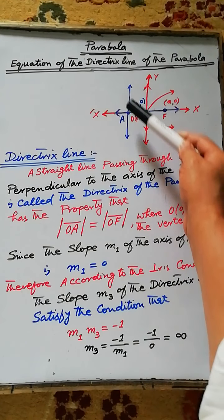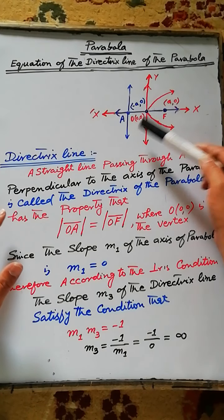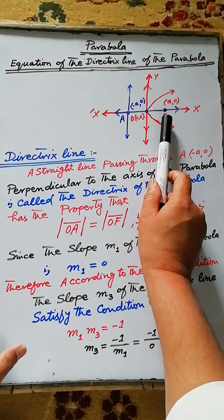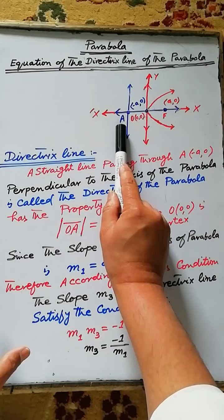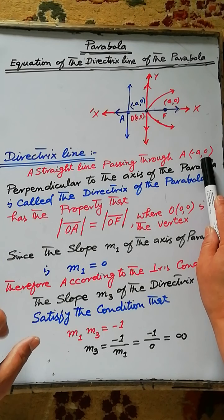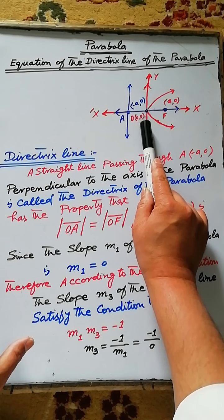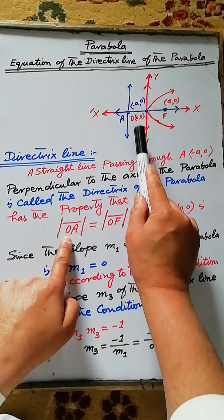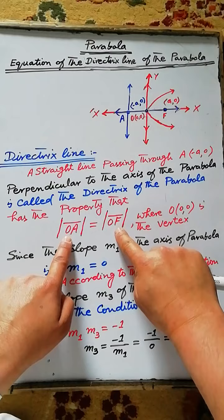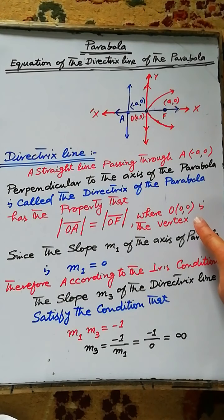Equation of the directrix line of the parabola. The directrix line of the parabola is a straight line perpendicular to the axis of the parabola, passing through the point A whose coordinates are (-a, 0), having the property that the distance of point A from O is equal to the distance between point O and F, where F is the focus and O is the vertex of the parabola.